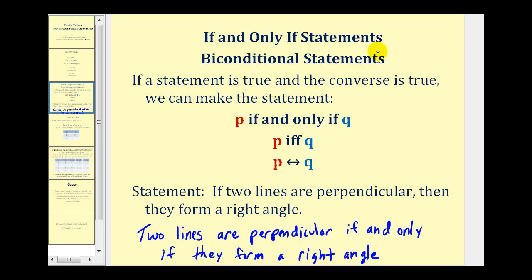But when completing a truth table, the most important thing to remember is this biconditional statement is true if p then q is true, and if q then p is true. Let's take a look at our example.